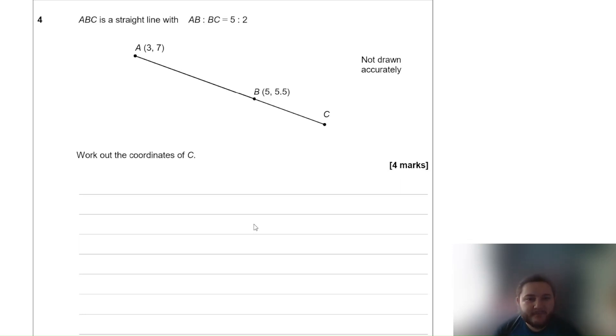Okay then. ABCD is a straight line with AB to BC in the ratio of 5 to 2. And they give us a diagram. They say work out the coordinates of C. Well, how far across is it between A and B? It's 2, because the x coordinate goes from 3 to 5. And then how far does the coordinate go down between A and B? Well it goes down 1.5.